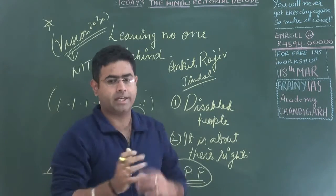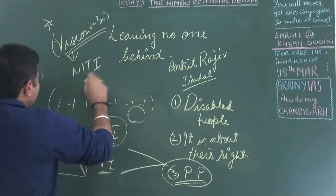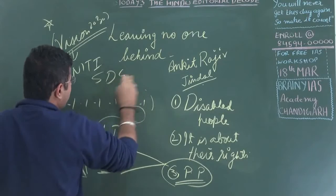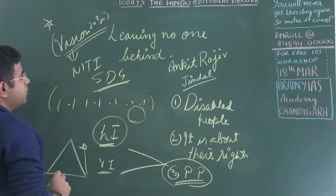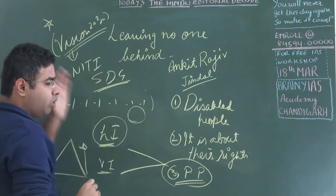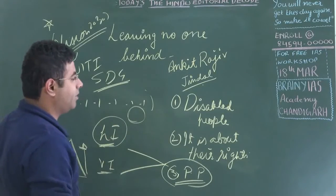It will be creating a kind of goalposts that the country has to achieve with respect to developments. Vision 2030 will also overlap with Sustainable Development Goals.